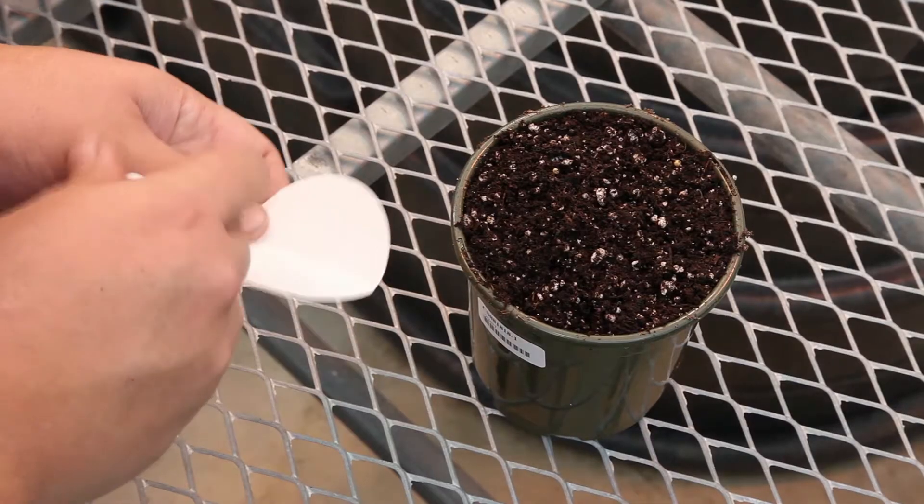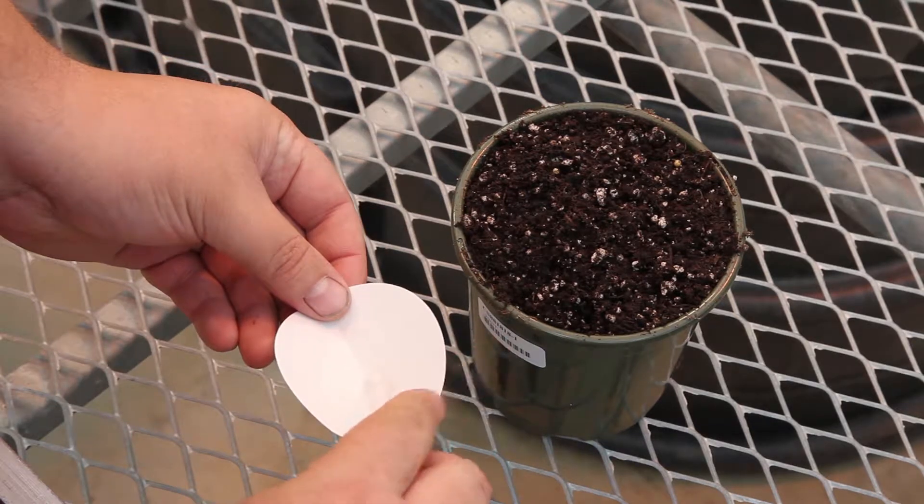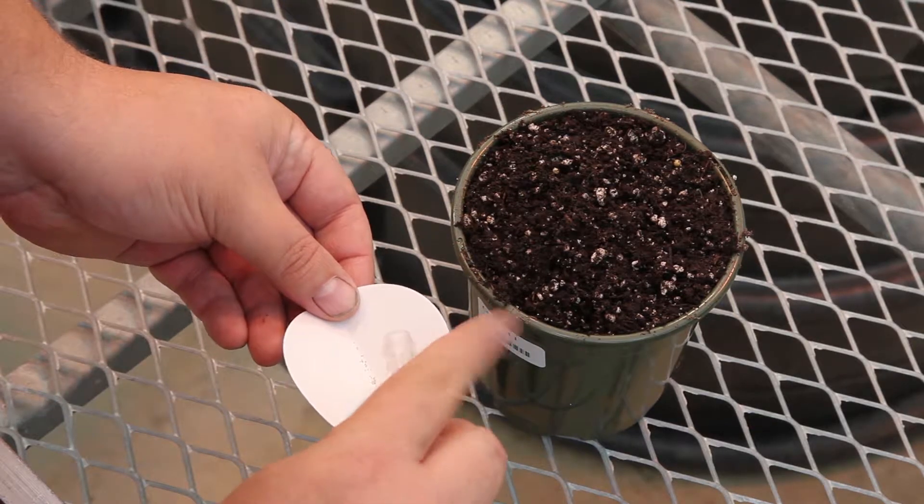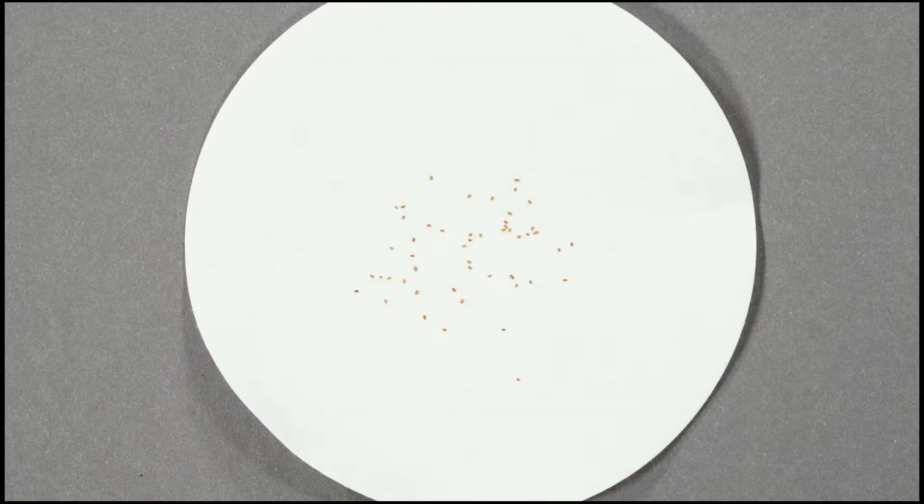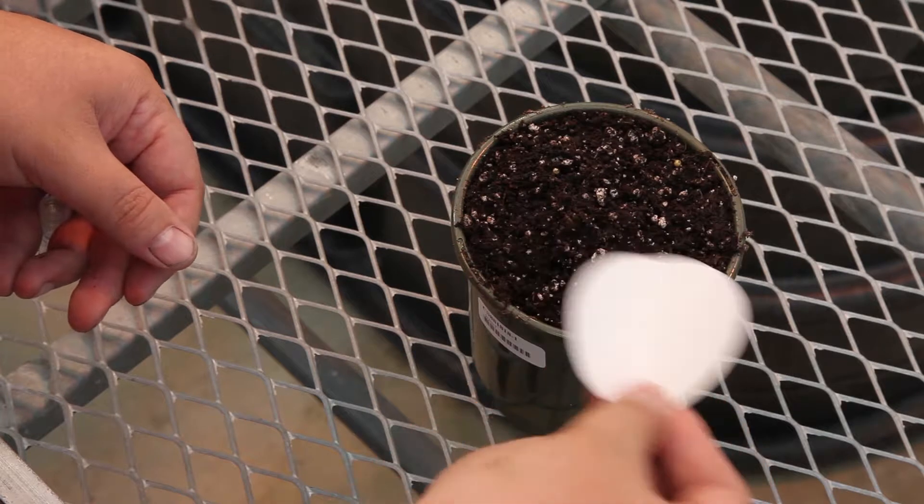Place approximately 50 seeds onto a piece of filter paper. Using filter paper will allow you to more evenly distribute the seeds on top of the soil. Gently shake the filter paper over the soil to distribute the seeds.